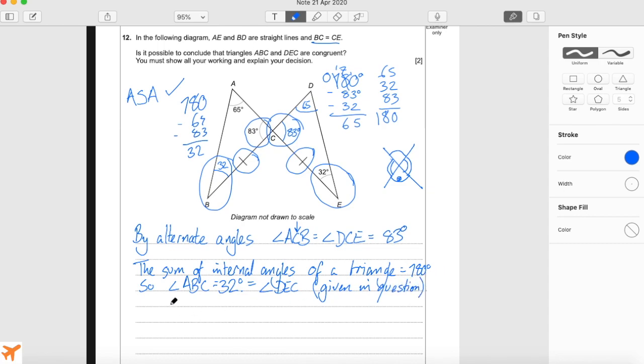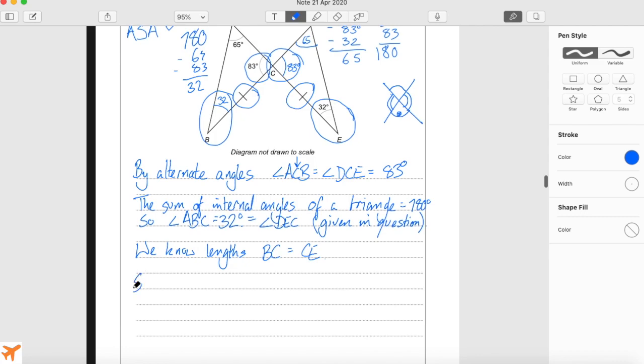Now I'll go on to say that we know lengths BC equals CE. So by the angle-side-angle or ASA rule...